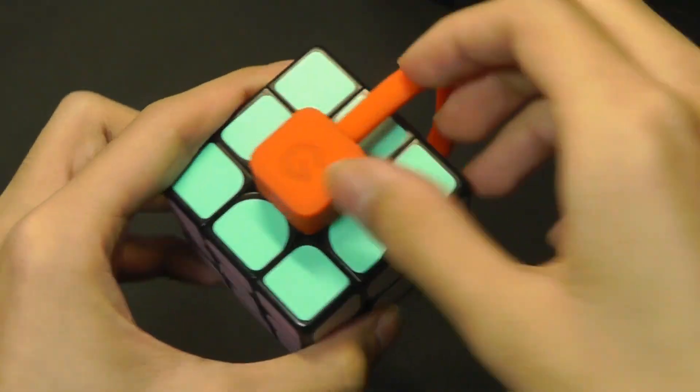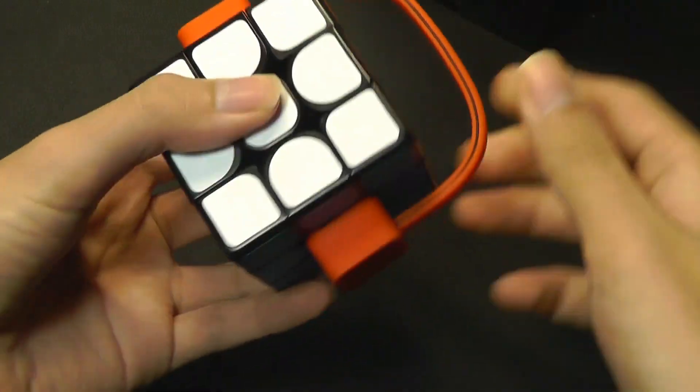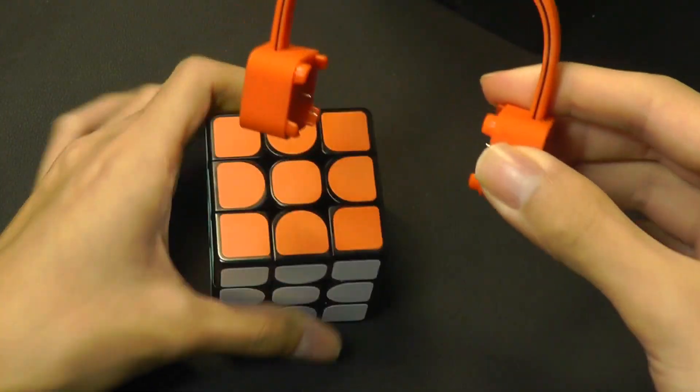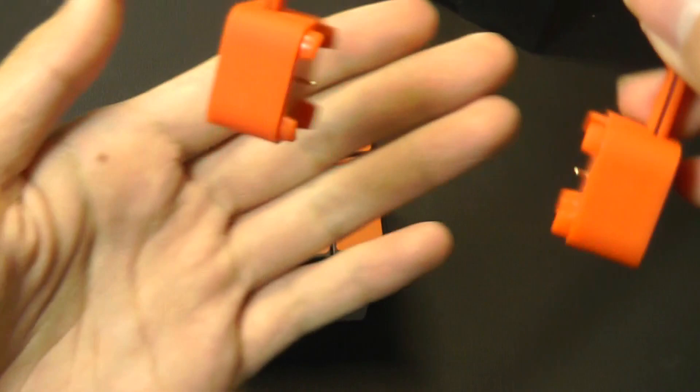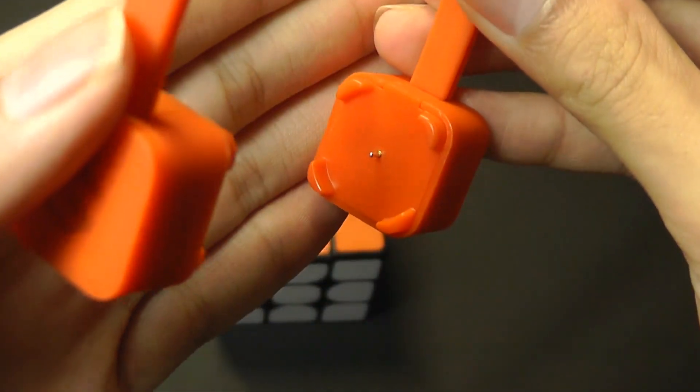When you are done, you can just unplug it by applying a little bit of pressure, and the whole charging mechanism comes out. It's just using these two very small contact points, as you can see there.